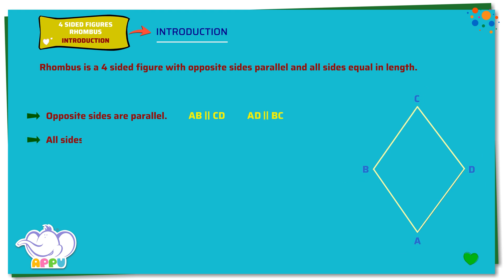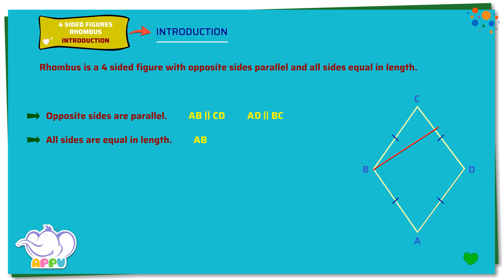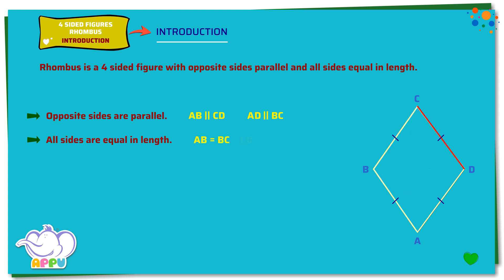All sides are equal in length. Here, length of AB equals length of BC equals length of CD equals length of DA.